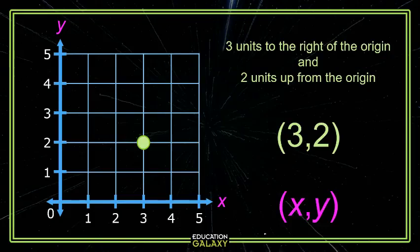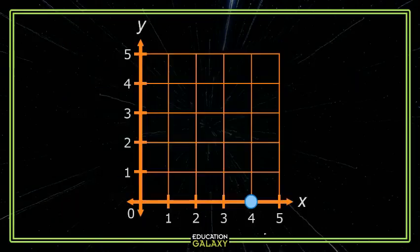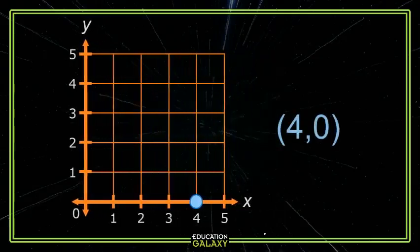Let's try one of these together. This point is four units to the right of the origin along the x-axis. It is zero units up, so this is the point 4, 0.